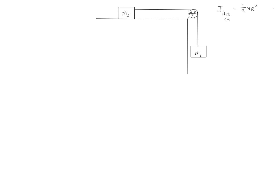Our goal will be to find the block's accelerations and also the tensions in the string. Just like we did previously, we'll set up a coordinate system such that the direction of the acceleration of the blocks will be the direction of my positive x axis. M1 will be falling downward, M2 will be accelerating to the right, so to the right is positive x and upward is positive y. That coordinate system flips over the pulley, so by the time it gets to M1, the positive x direction would be facing downward. For the pulley, any torques that cause it to spin clockwise we're going to consider to be positive.